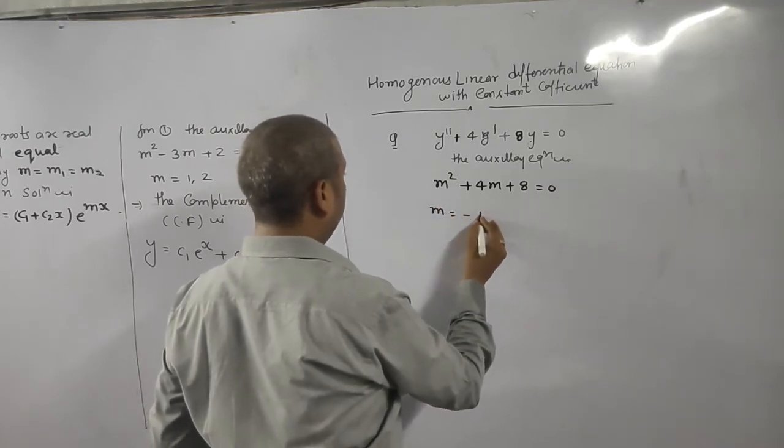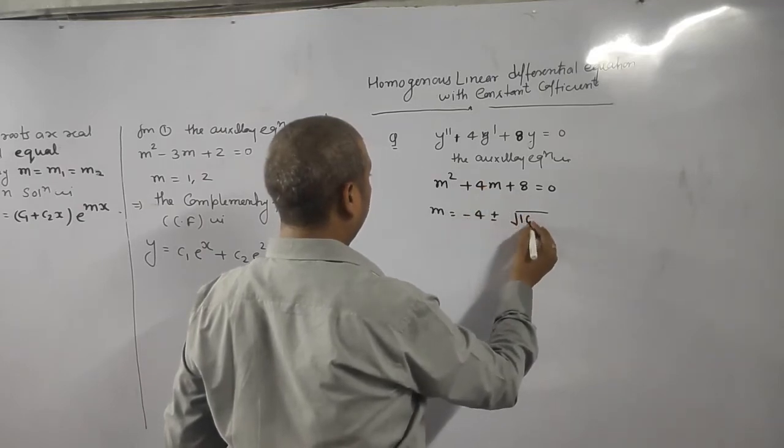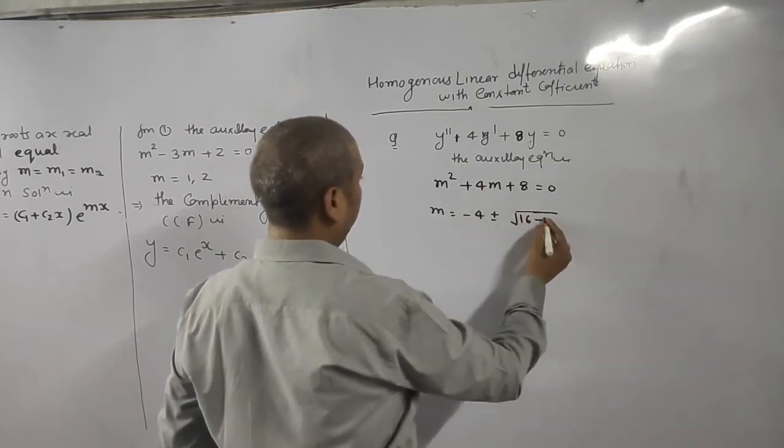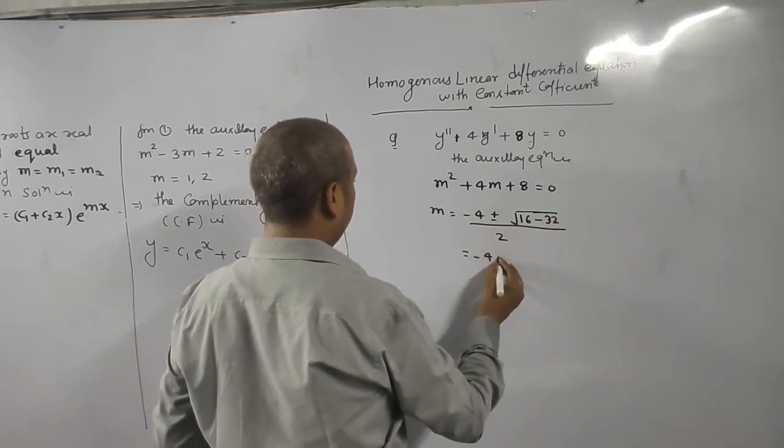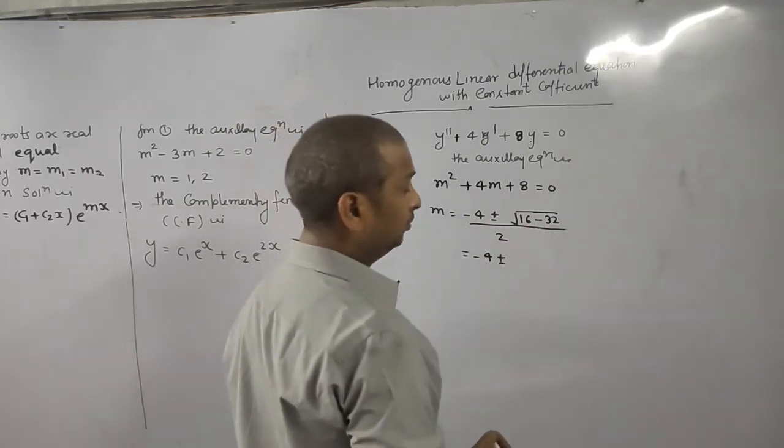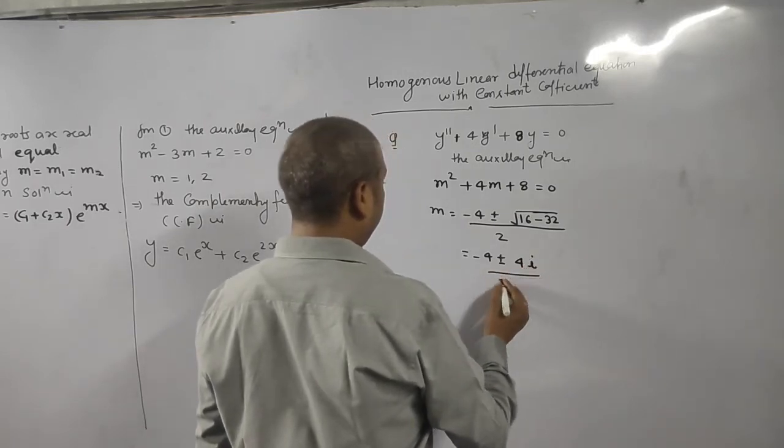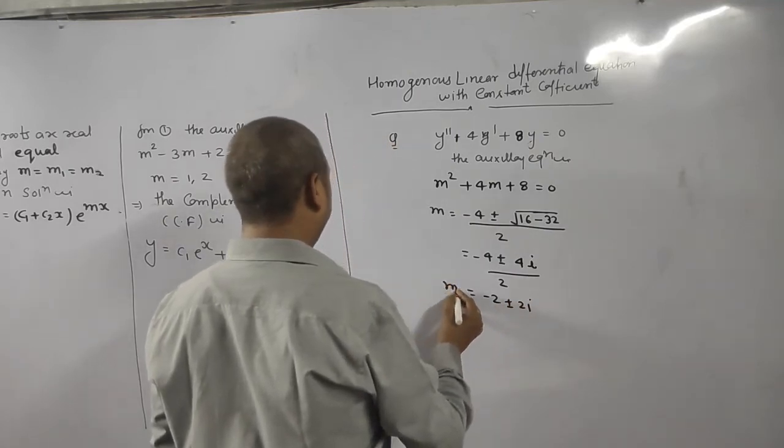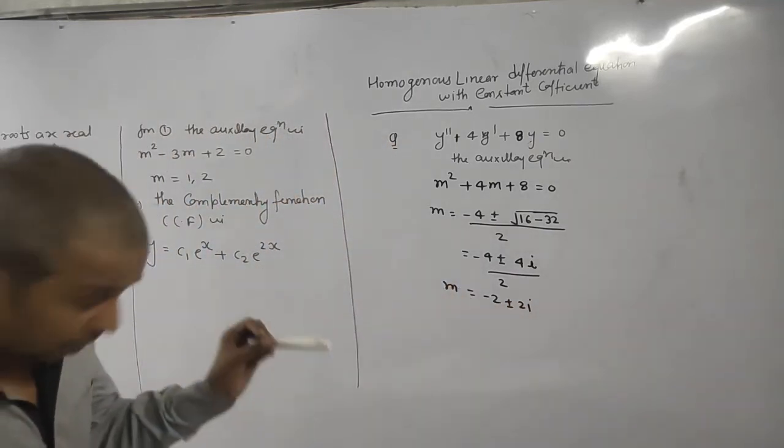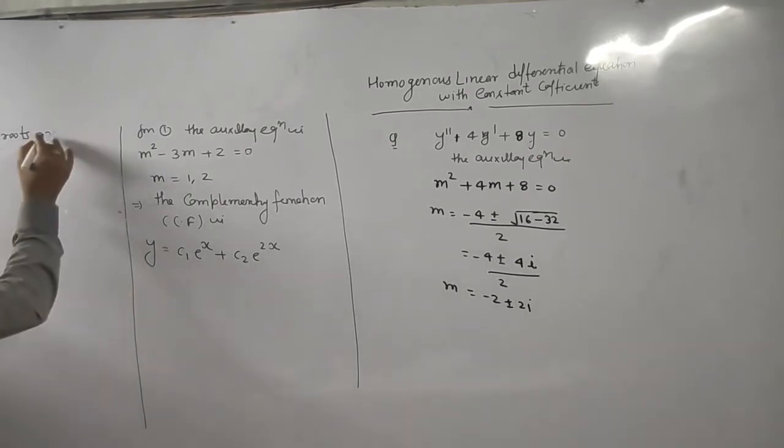What is m value? Minus b plus minus square root b² minus 4ac by 2. This gives us minus 2 plus minus 2i. So here roots are imaginary. When roots are imaginary,